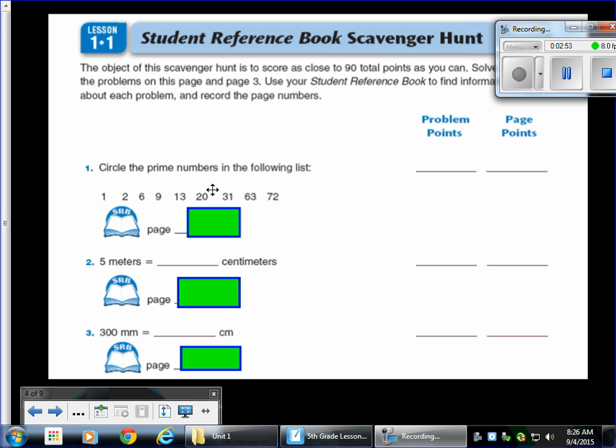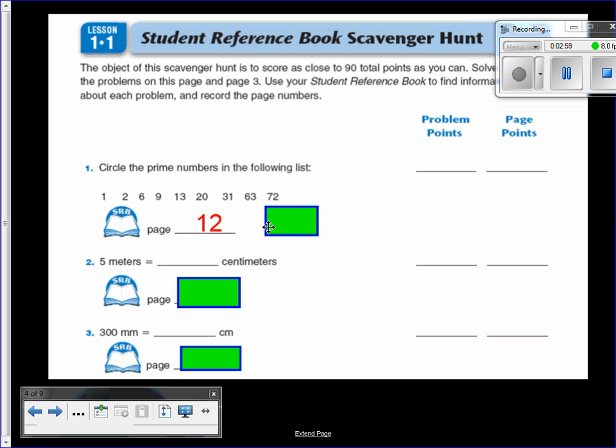So this first problem, it says circle the prime numbers in the following list. If you don't remember what a prime number is, I want you to go ahead and go to page 12 in your student reference book. Go ahead and take a look at what a prime number is, what a composite number is. This will help you out. Go ahead and circle the prime numbers in this list. Keep in mind, there's something special about the number one. So don't get confused with the number one, but look closely at page 12 and I'll help you out with what to do with the circling of the number one. And of course, if you have any questions, I'll be walking around the room. I'll be able to help you out.